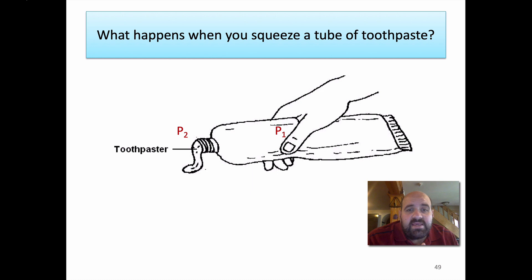So you squeeze a tube with toothpaste. We know that the toothpaste comes rushing out the open end. You're exerting a pressure here where you're squeezing the toothpaste, and the toothpaste is coming out with a certain pressure. These two pressures are actually equal.